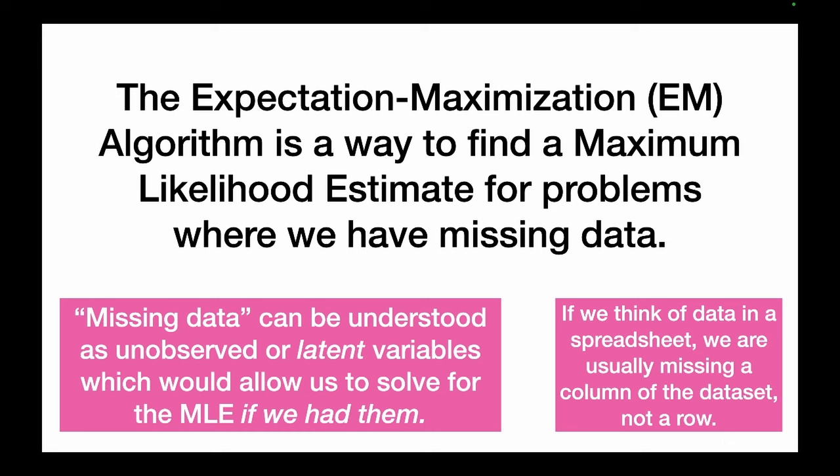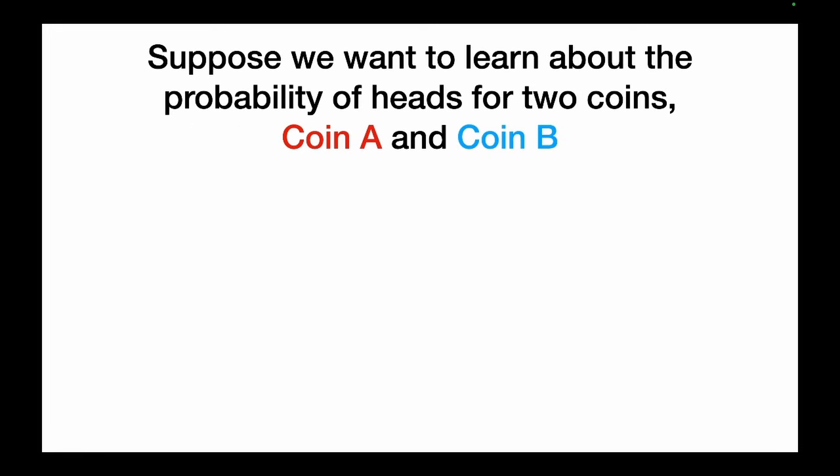If we think of data in a spreadsheet, we are usually missing a column of the data set — a variable — not a row, not an individual in the data set. First, we're going to look at an example of using the EM algorithm, and then we're going to understand what happens under the hood.